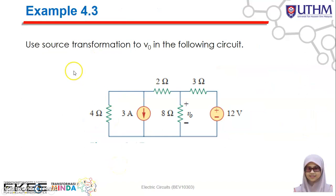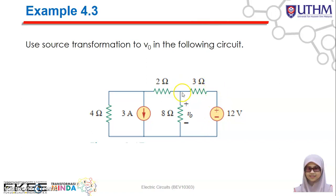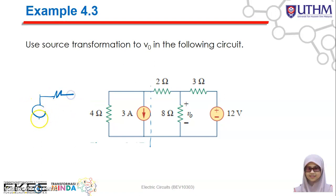Now let's move to the example on how to use source transformation to find the value of V0 in the following circuit. V0 is the voltage across the 8-ohm resistor. You have a current source connected in parallel with a 4-ohm resistor, and a voltage source connected in series with a 3-ohm resistor. Based on this, you can do source transformation by transforming the current source and resistor to a voltage source.